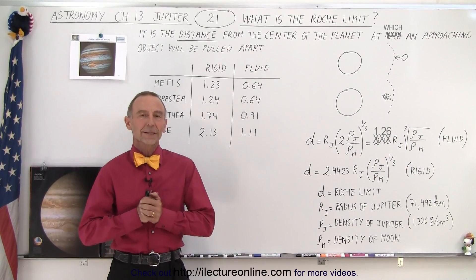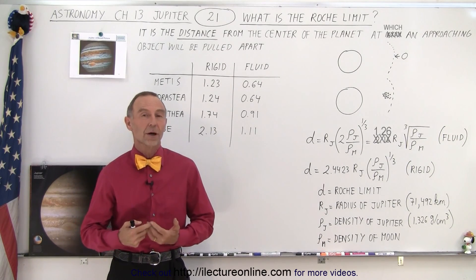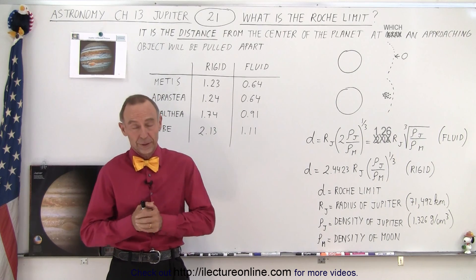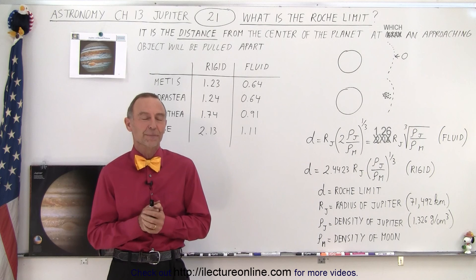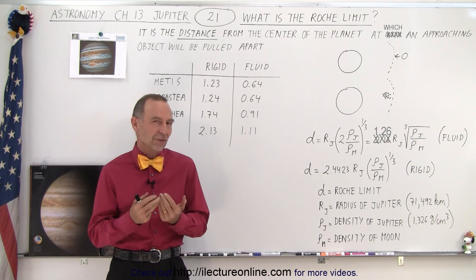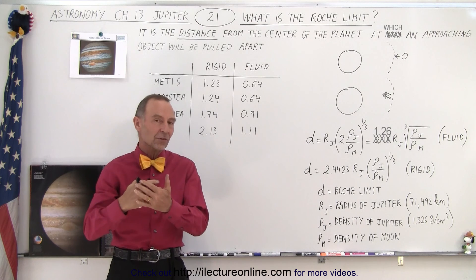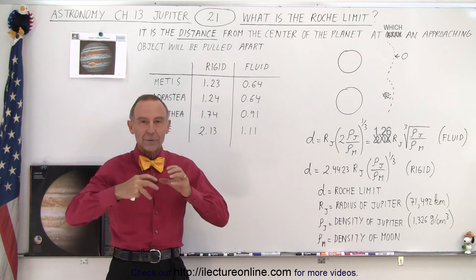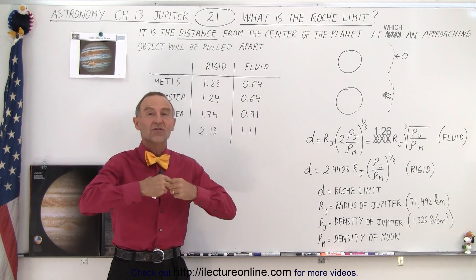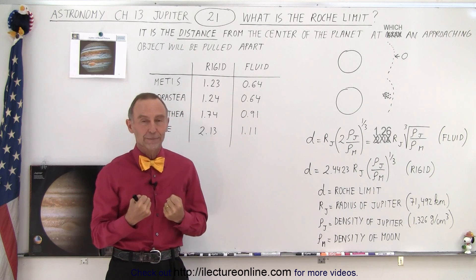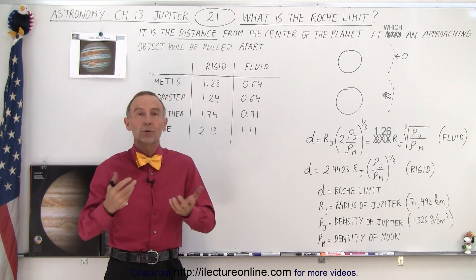Welcome to our lecture online. Now let's talk about the Roche limit of Jupiter. Before we can talk about it, we need to understand what the Roche limit actually is. It's a distance, and if an object comes within that distance, the gravitational forces of the planet will be so strong that it will essentially pull that object apart, especially if it's a large enough object, such as a small moon.